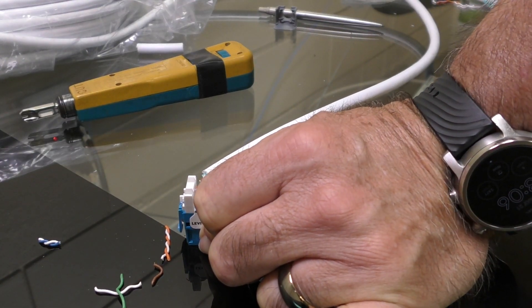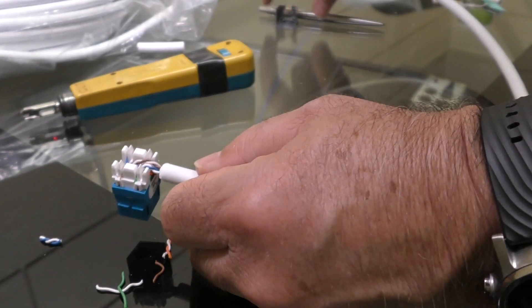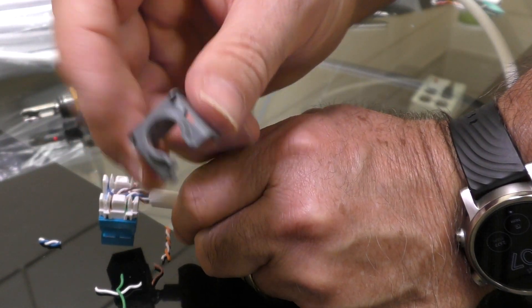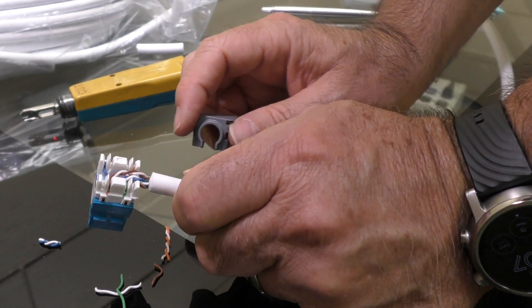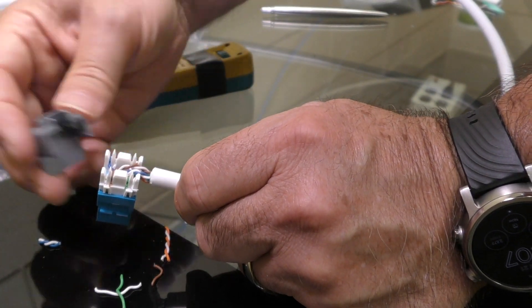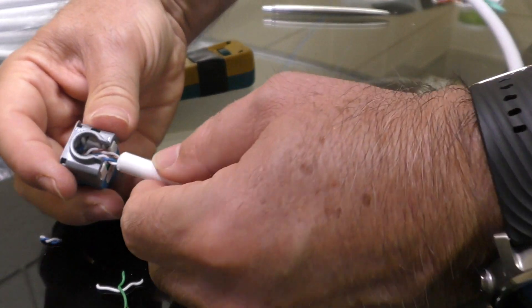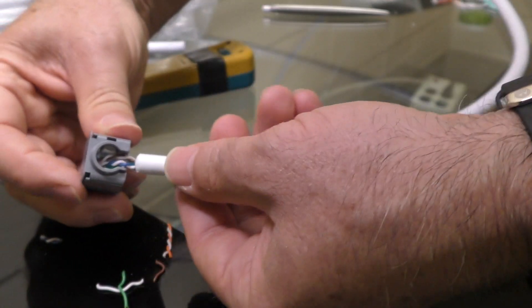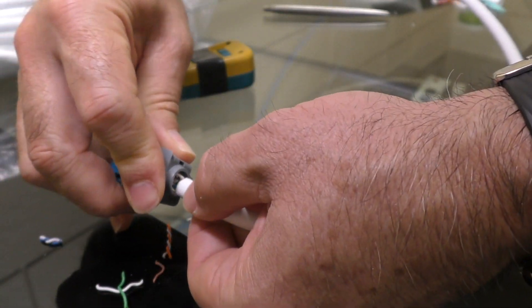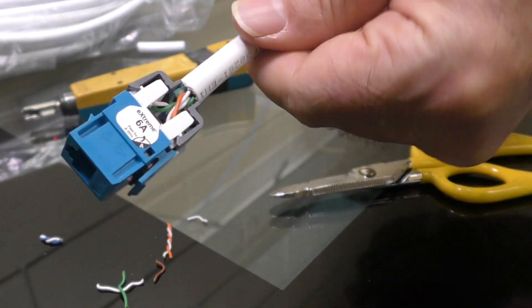Almost all jacks come with what's known as a dust jacket. On the 6A it's a little bit different. At least for this one, this is a Leviton Cat 6A jack, and they call this thing the cone of silence and it fits over the top like that. Then what you do is take the rest of the cable and just bend it up like this. That's what it should look like when it's done right there.